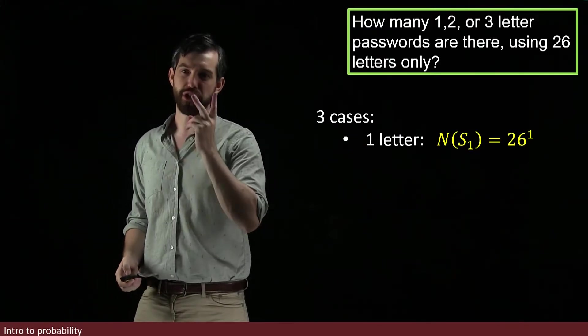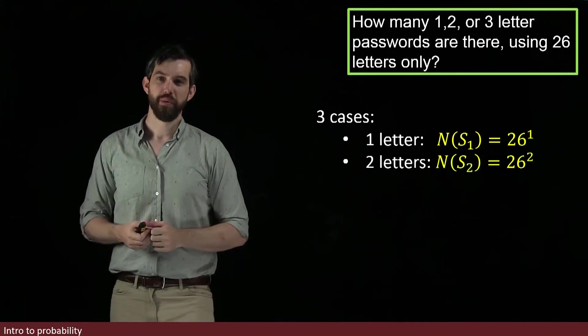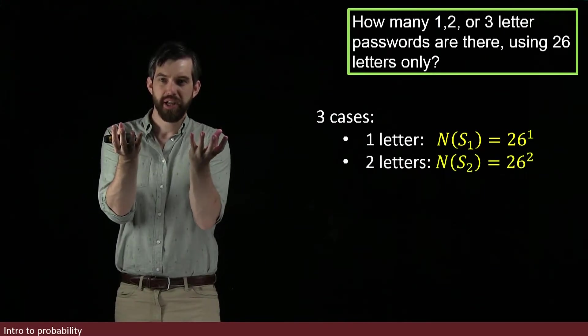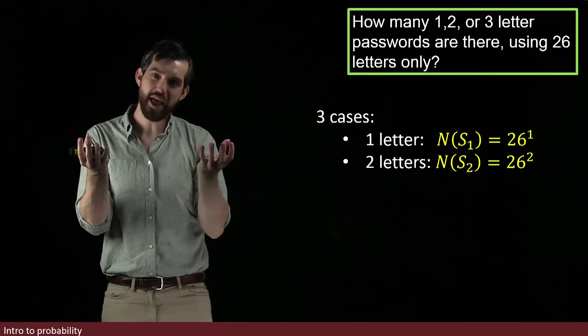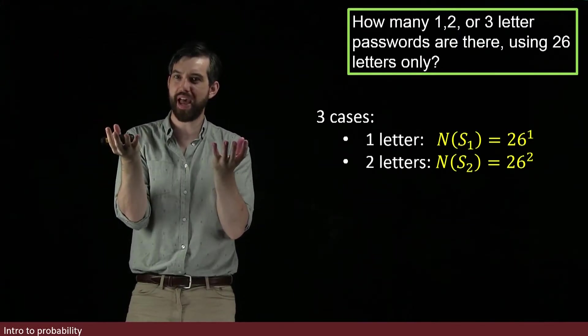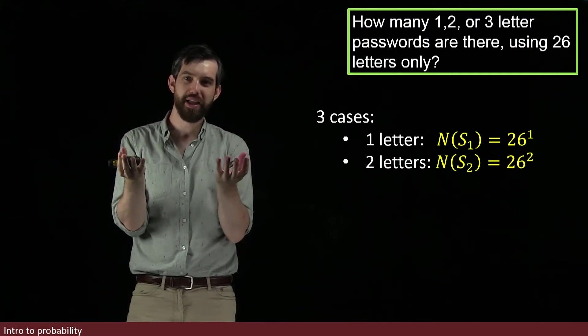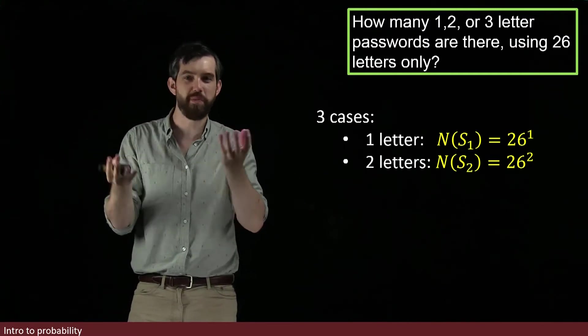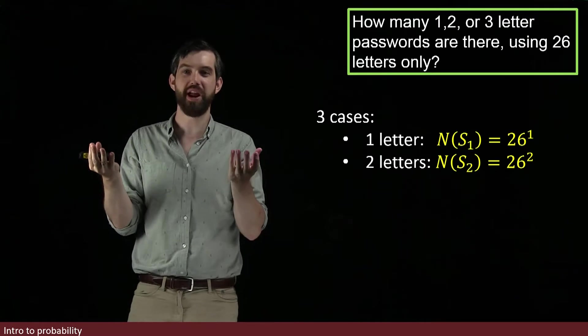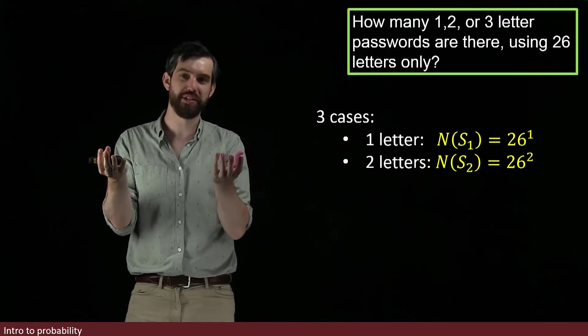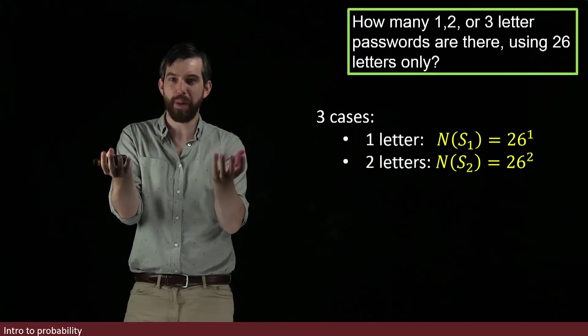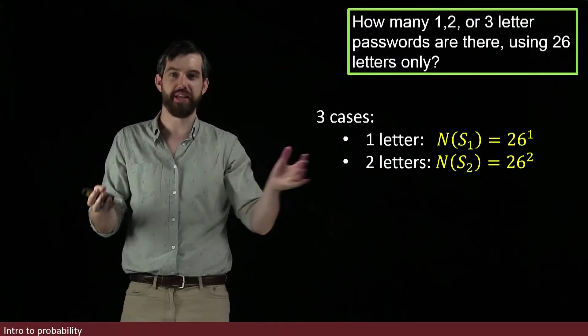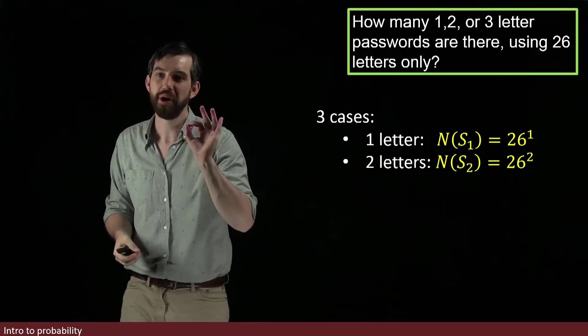What about the two-letter scenario? Well, now I've got two letters. There's 26 possibilities I can put in for that first letter. And then, there's 26 possibilities I can put in for that second letter as well. And so, because they're independent, I don't care if they repeat, I don't care if the password is AA, for instance. Then, everything's independent here, and I just multiply them out. There's 26 times 26, or 26 squared possibilities.